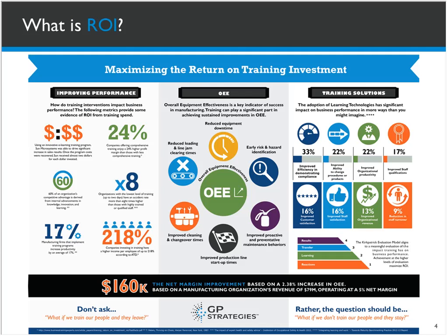So what is ROI? Here's a great infographic — we'll be able to send this out post-session. We can talk about ROI as improving performance: whether that means increasing revenue, increasing your team's ability to perform, overall equipment effectiveness in a plant environment — making sure you're running at optimal pace and reducing downtime. Or we might be talking about training solutions: how effective, how satisfied, how well knowledge transfer is occurring. These are all the details we want to have to validate the money we're spending on training.